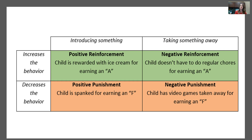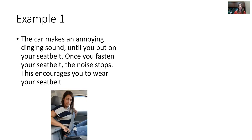Another way to punish or decrease the behavior would be to take something away — negative. But in this case, you're taking something away that they want as a way of punishing them. So a child can't go see their friends or can't play video games because they earned bad grades. That's going to make them not want to do it again, because you took away something that they wanted.